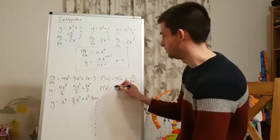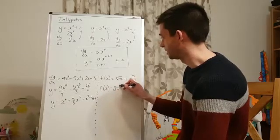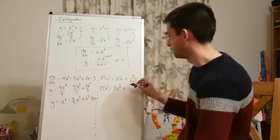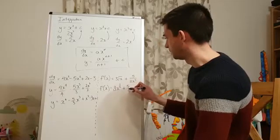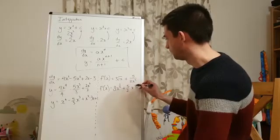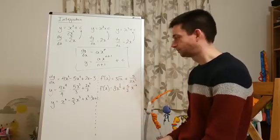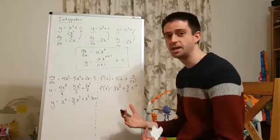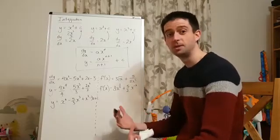So, 3 root x is going to become 3x to the power of a half, and 5 over 2x squared, I'm going to write that as 5 over 2, x to the power of negative 2. And now I've got it into a form where I can integrate it. I haven't integrated it yet, it's just in a form that allows me to integrate.